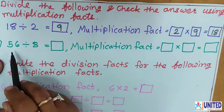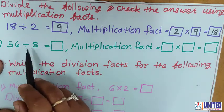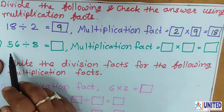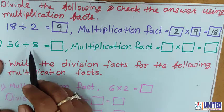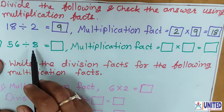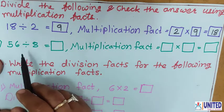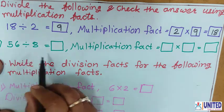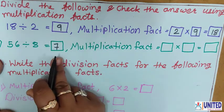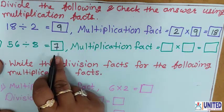Now number 2: 56 divided by 8. Here, 56 is the dividend and 8 is the divisor. Now you have to find out the quotient. Speak out the table of 8 until 56 comes. So, 8 sevens are — so what is the quotient? 7. So what is the answer here? 7.